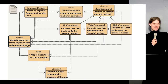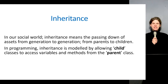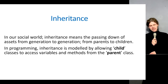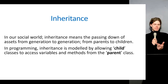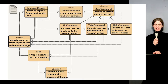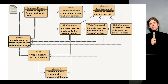Let's talk about inheritance. You're probably familiar with the definition — when one generation inherits assets passed down from the next generation, from parents to children. In programming, this object-oriented concept is expressed in terms of a child class having access to the variables and methods of a parent class. In our diagram, GoCommand, TakeCommand, and HelpCommand are inheriting from ZoolCommand, as shown by the arrows pointing towards the parent.